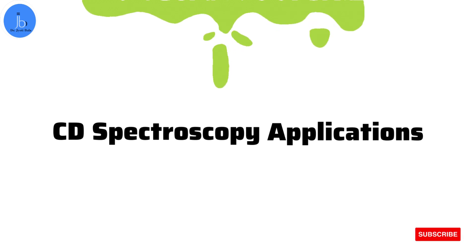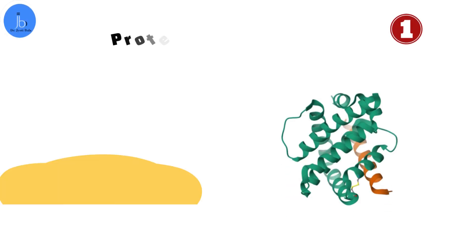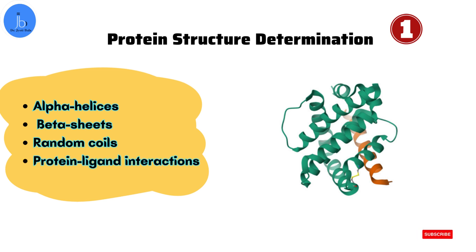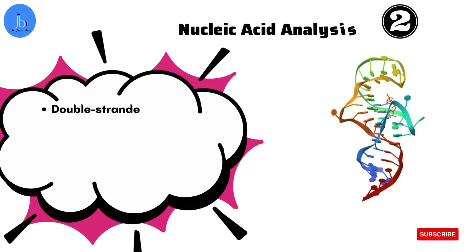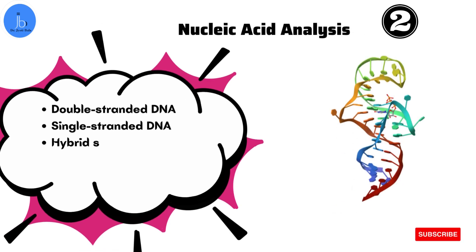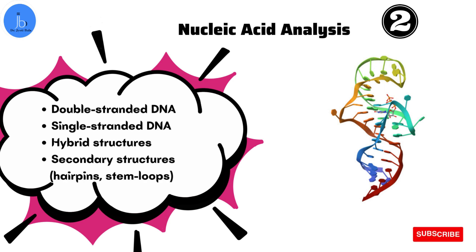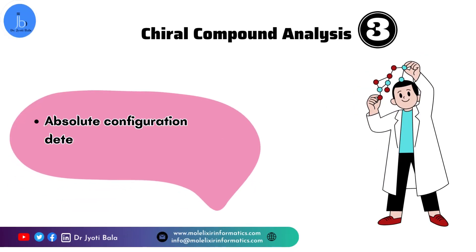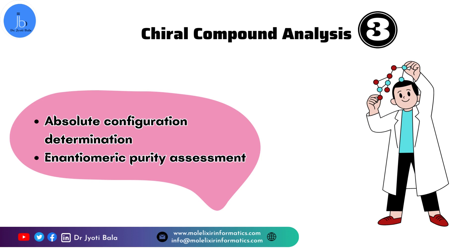Now let's explore the five crucial applications of CD spectroscopy. CD is widely utilized in protein structure determination — you can utilize CD for alpha helix, beta sheet, random coil, and protein-ligand interaction studies. You can also utilize CD for nucleic acid analysis such as double-stranded DNA, single-stranded DNA, hybrid structures, and secondary structures such as hairpins and stem loops. Additionally, you can also utilize CD for chiral compound analysis such as absolute configuration determination and also for enantiomeric purity assessment.